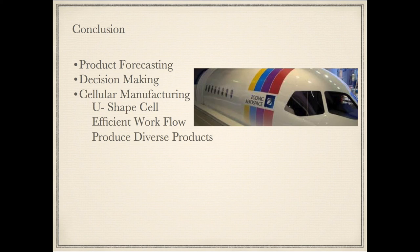Conclusion: Key takeaways include product forecasting, decision making, cellular manufacturing with U-shape cells for efficient workflow, and the ability to produce diverse products.